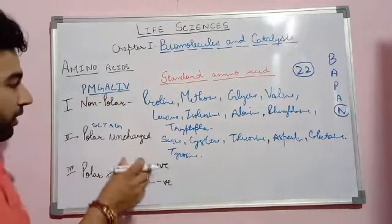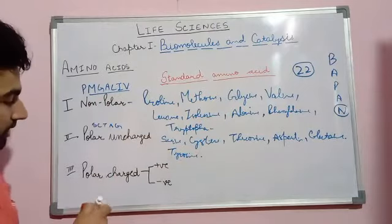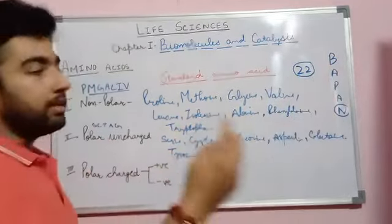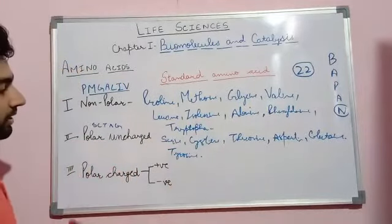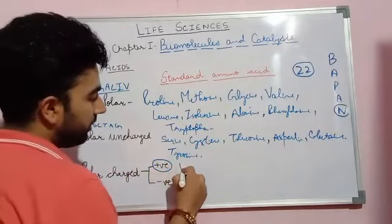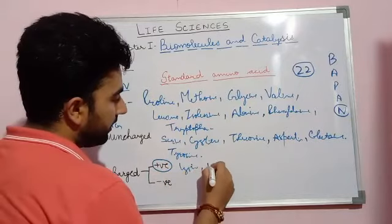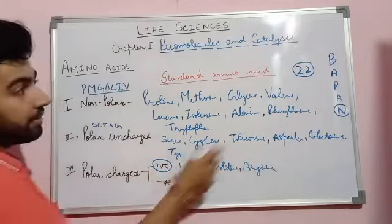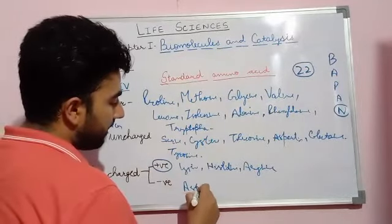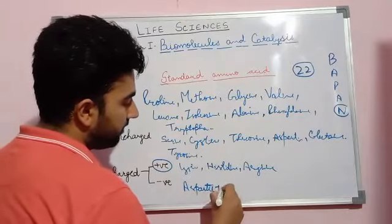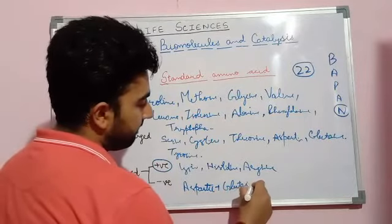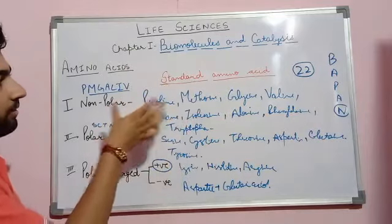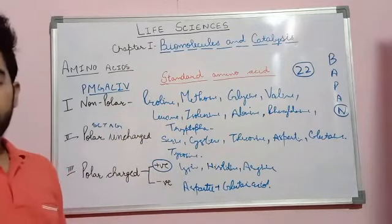The last type is polar charged amino acids. There are two sub-types: basic amino acids and acidic amino acids. The basic amino acids include lysine, histidine, and arginine. The acidic (negatively charged) amino acids include aspartic acid and glutamic acid.